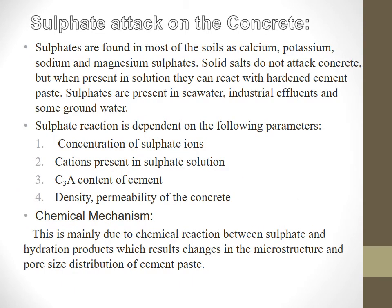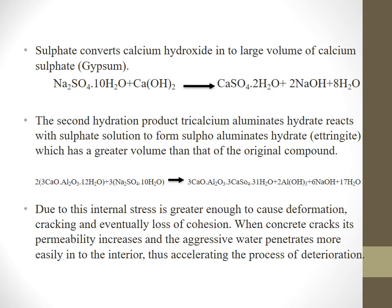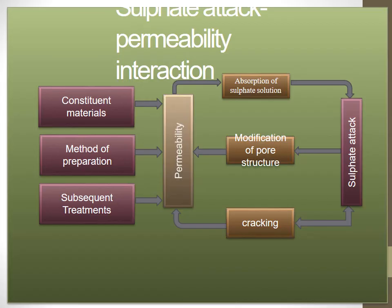Sulfate attack on concrete: Sulfates are found in most soils as calcium, potassium, sodium, and magnesium sulfates. Solid salts do not attack concrete, but when present in solution they can react with hardened cement paste. Sulfates are present in seawater, industrial effluent, and some ground water. Physical damage usually starts at edges and corners and is followed by progressive cracking and spalling, which reduces the concrete to a soft state. The rate of sulfate attack increases with an increase in the strength of the solution. This can be reduced by use of cement low in tricalcium aluminate (C3A) and by the addition of pozzolanic material. Prevention: use dense concrete and a low water cement ratio.